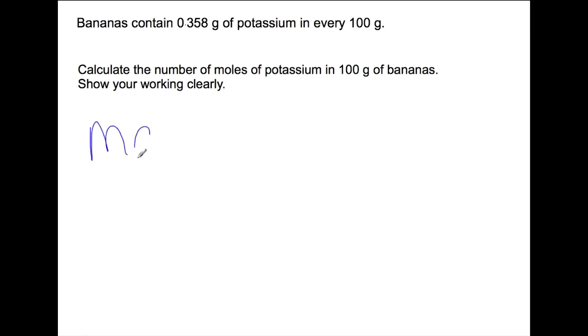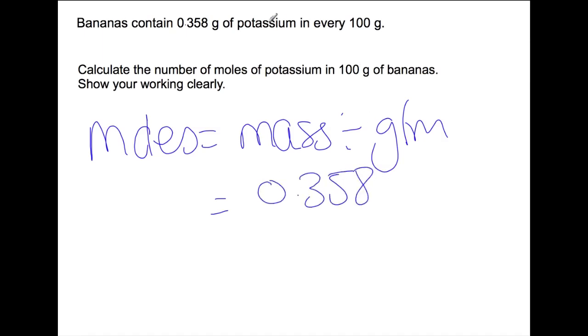So to do this you are using the moles equals mass divided by gram formula mass triangle. The mass being 0.358 grams from the question because we are just looking at 100 grams of bananas. We are going to divide by the gram formula mass of potassium to get 0.009 moles.